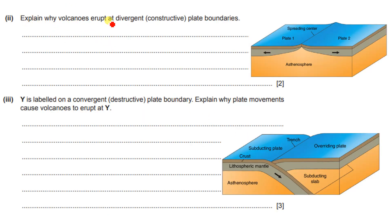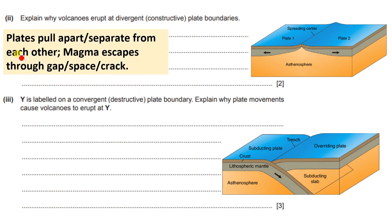Now, explain why volcanoes erupt at a divergent or constructive plate boundary. At a divergent plate boundary, two plates are moving away from each other, which creates a gap and allows a volcano to erupt. Simply put, as the plates pull apart or separate, magma escapes through the gap to fill it up, causing a volcanic eruption.